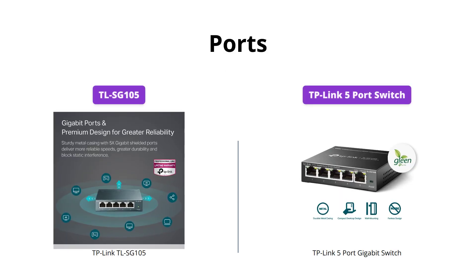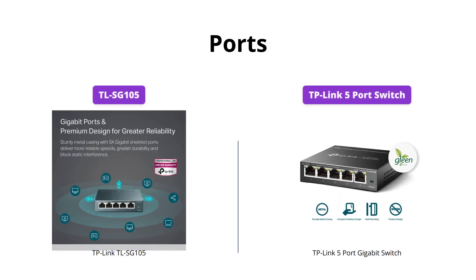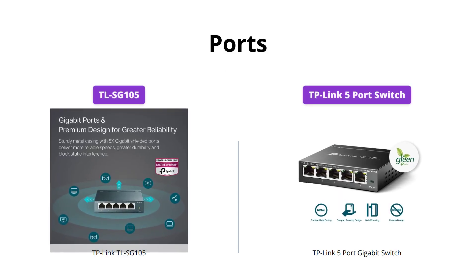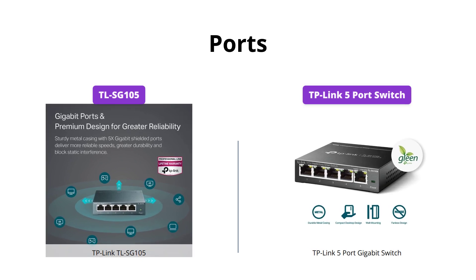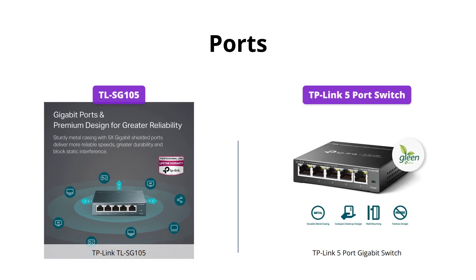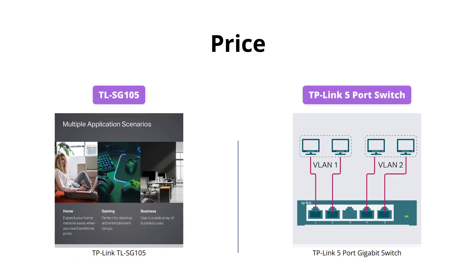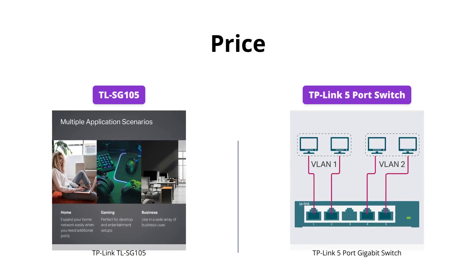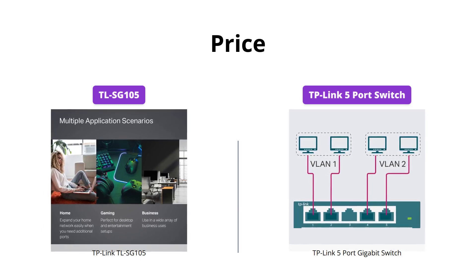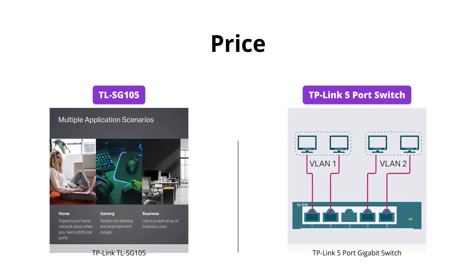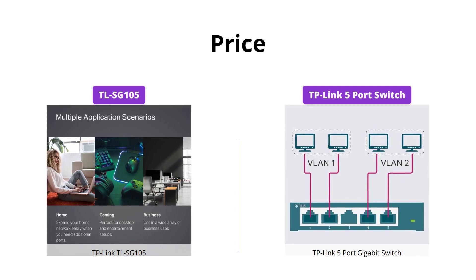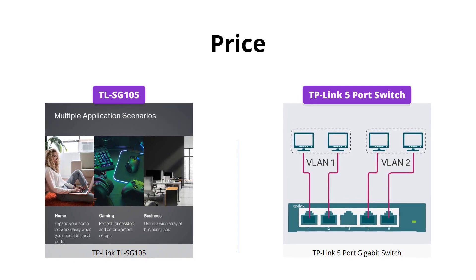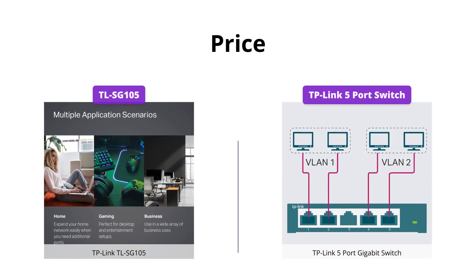TP-Link 5 port gigabit switch wins with its instant 5 gigabit ports, enabling faster large file transfers. With a lower price point of $15, TLSG105 edges ahead of TP-Link 5 port gigabit switch priced at $22.